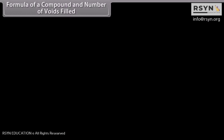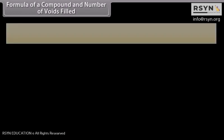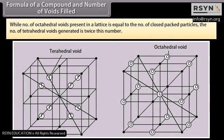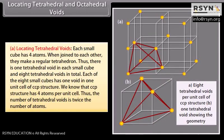The number of octahedral voids present in a lattice is equal to the number of close packed particles, while the number of tetrahedral voids generated is twice this number. To locate tetrahedral voids: each small cube has four atoms which, when joined to each other, make a regular tetrahedron. There is one tetrahedral void in each small cube and eight tetrahedral voids in total. Since the CCP structure has four atoms per unit cell, the number of tetrahedral voids is twice the number of atoms.